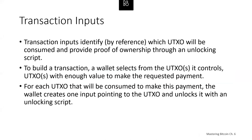Transaction inputs identify by reference which UTXOs are going to be consumed and provide proof of ownership through an unlocking script. To build a transaction, a wallet selects UTXOs it controls with enough value to make the required payment. For each UTXO consumed, the wallet creates one input pointing to that UTXO and unlocks it. The first part of an input is a pointer to a UTXO by reference to the transaction hash and output index. The second part is the unlocking script, most often a digital signature and public key. The third part is a sequence number.